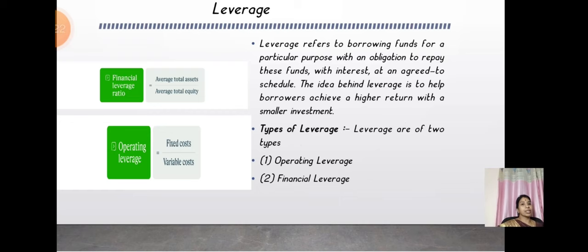Under leverage, we have two types. Leverage is borrowing funds for a particular purpose with an obligation to repay those funds with interest at an agreed schedule. The idea behind leverage is to help borrowers achieve a higher return with a smaller investment. The two types of leverage are financial leverage and operating leverage.